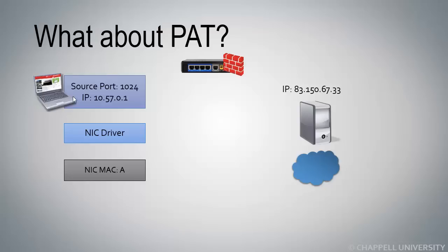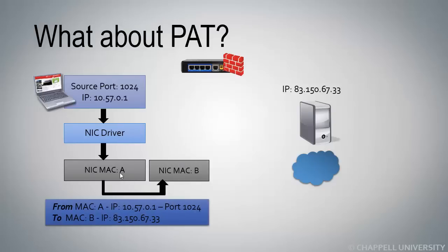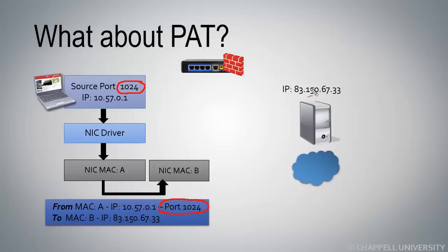In this example, we have a client at IP address 10.57.0.1, just as we did in the last example. When this host communicates, it sends the packet out from its local hardware address to the router's local hardware address, from its source IP address. Port address translation uses the information in the source port field of the client to demultiplex the traffic coming back. So our client is sending a packet out from source port 1024, and when it's sent to the router, we are still using source port 1024.